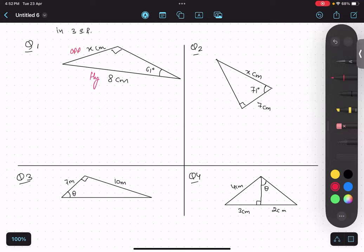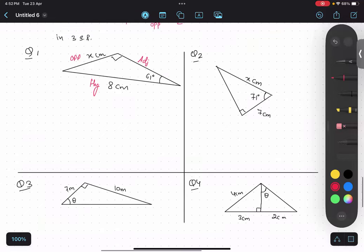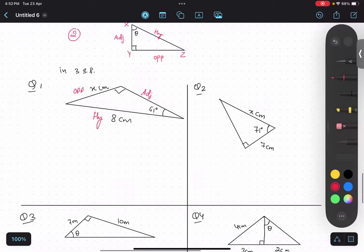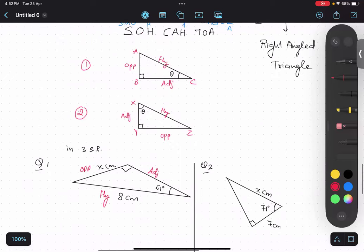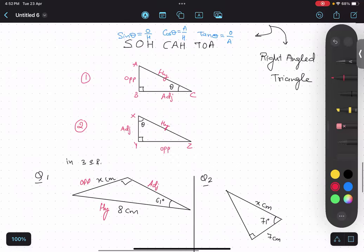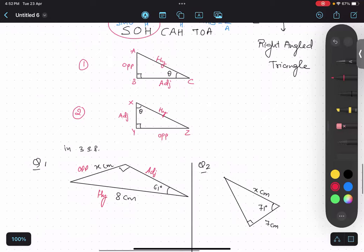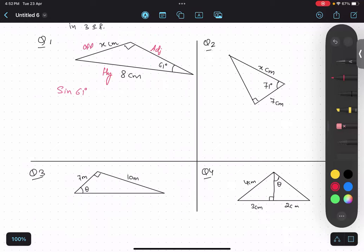Hypotenuse is always opposite to 90 degree and the remaining becomes adjacent. Now we want to find out the relationship between o and h. If we go back, o and h is sine theta. So sine 61 degree equals to opposite is x upon 8.